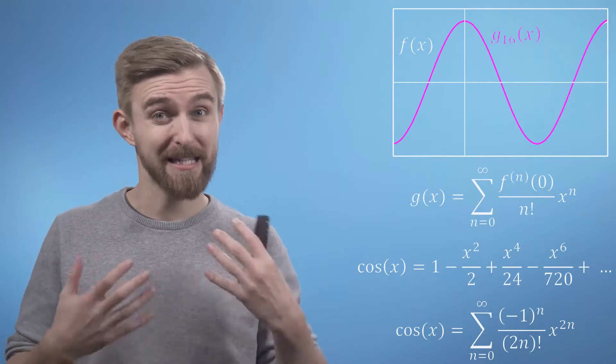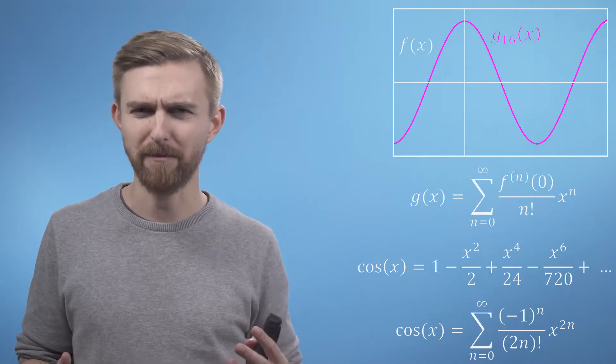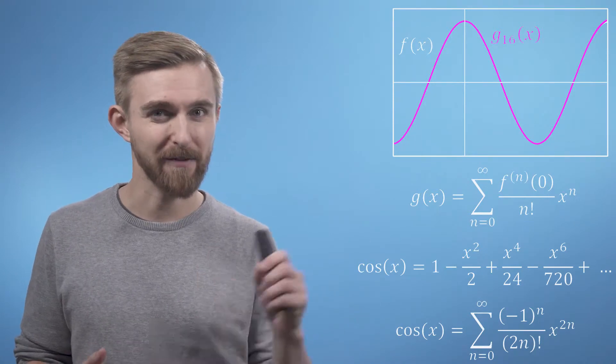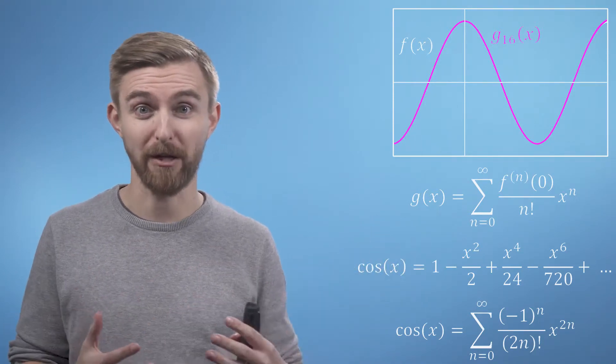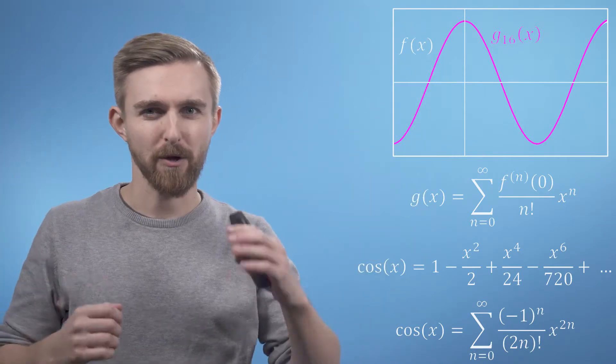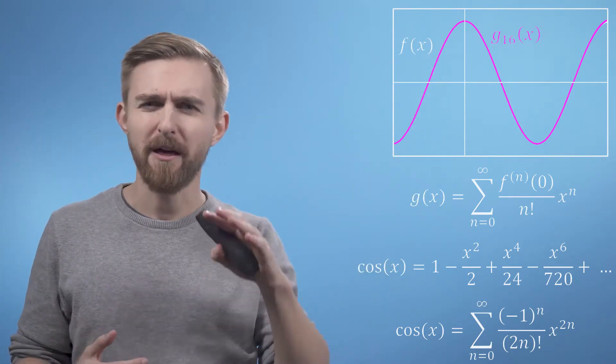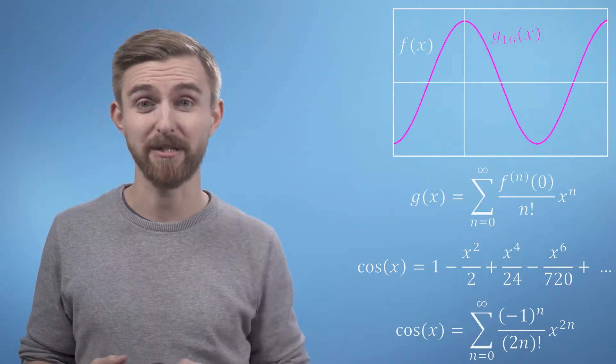By the time we get our 16th order approximation we've pretty much nailed the region shown in our graph here. Although just outside of these axes the function would also be growing hugely positive. So you must always be careful when handling series approximations that you know the domain in which it's acceptable.